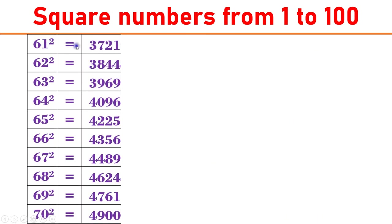61 square equals 3721. 62 square equals 3844. 63 square equals 3969. 64 square equals 4096. 65 square equals 4225.